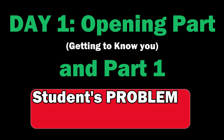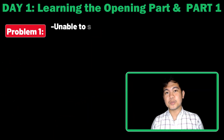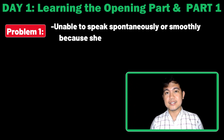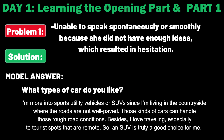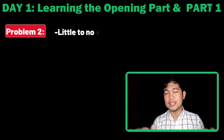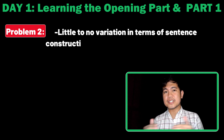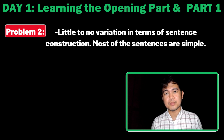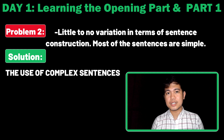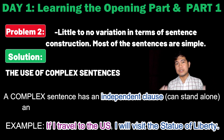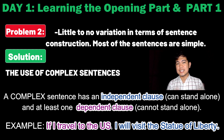Day 1: Learning the Opening Part in Part 1. Here are the problems and the solutions. First, she couldn't answer spontaneously in some of her answers because she didn't have ideas, and that affected her confidence in speaking. The solution: I provided a model answer to her so she could get some ideas from my answer. Second, she didn't vary her sentence construction — most of her sentences were constructed in a very simple way. The solution: the introduction of complex sentences. We learned how to answer in a more advanced way and how to construct sentences in a more complex way.